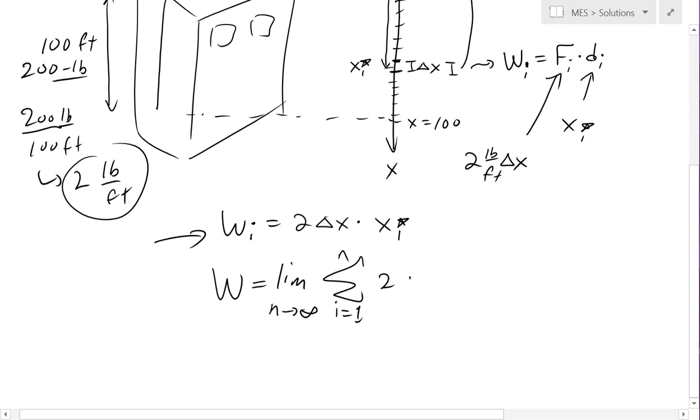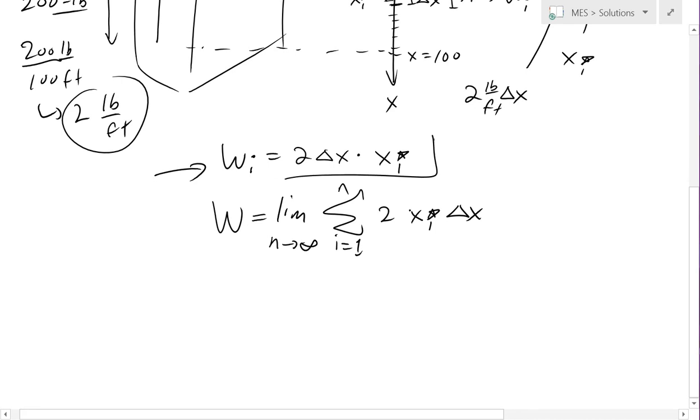of the summation from i equals to one up to n, of now we have this two times it by, we'll put this xi in front, xi star times it by delta x. So that's the work for one of them. So that's this right here, as we arrange it to write it like this.